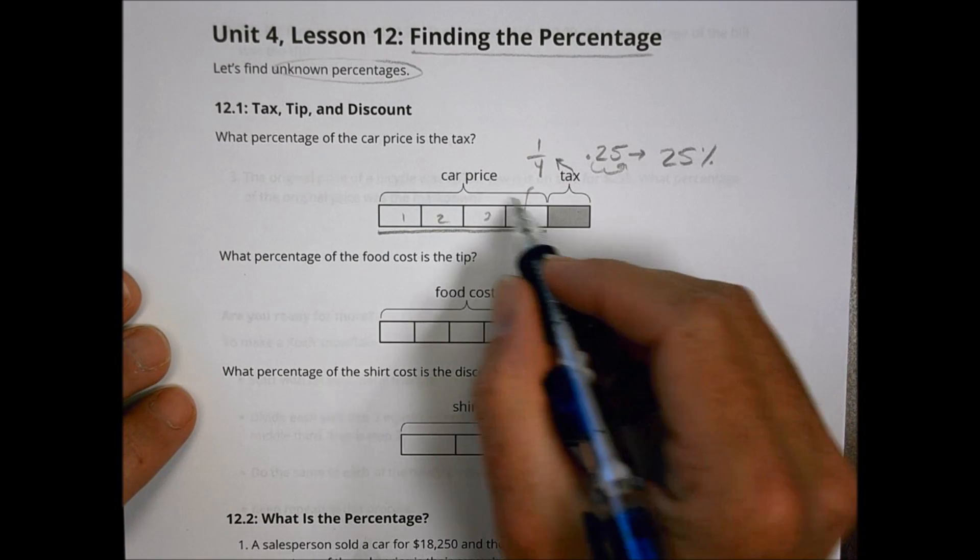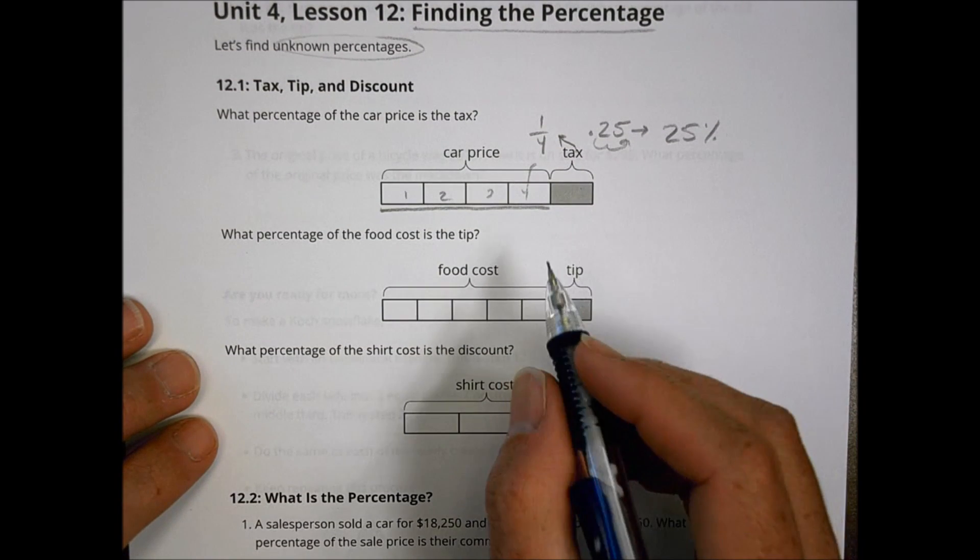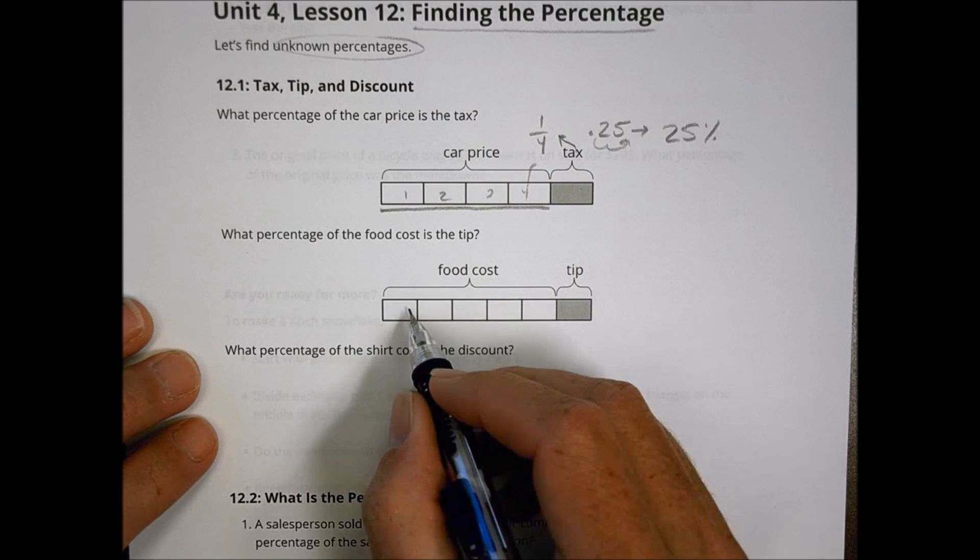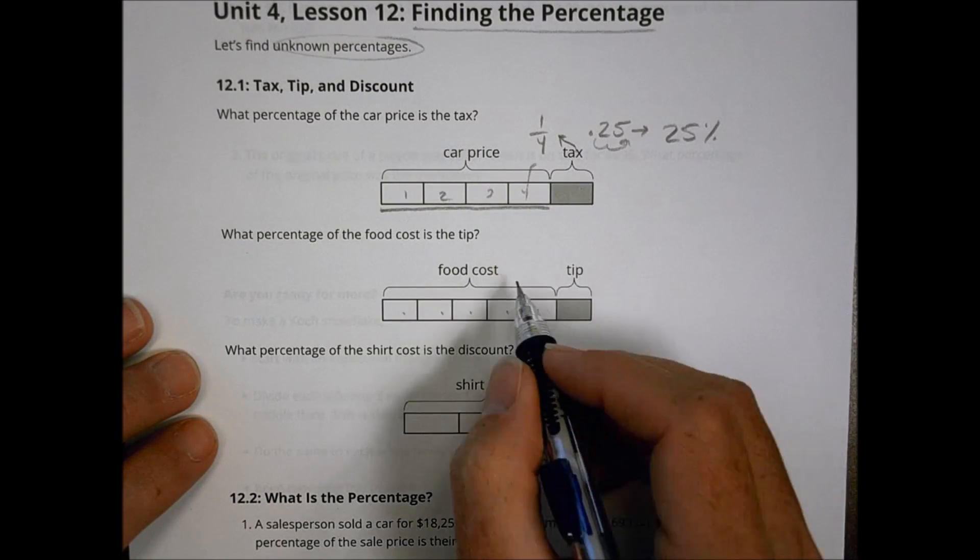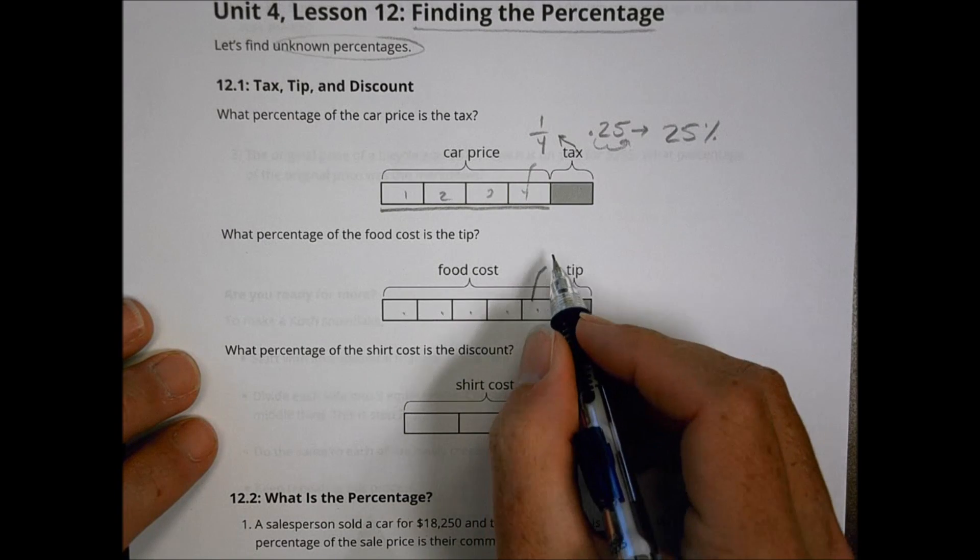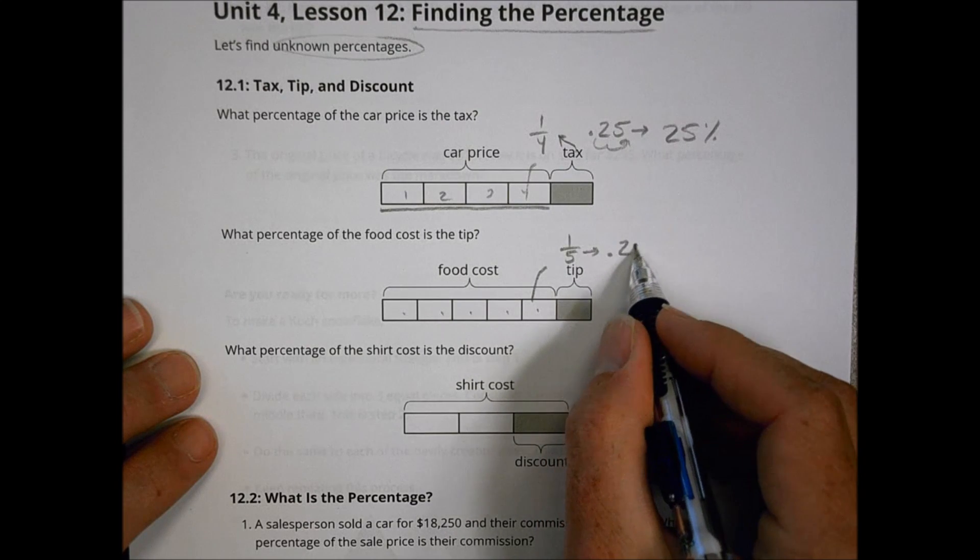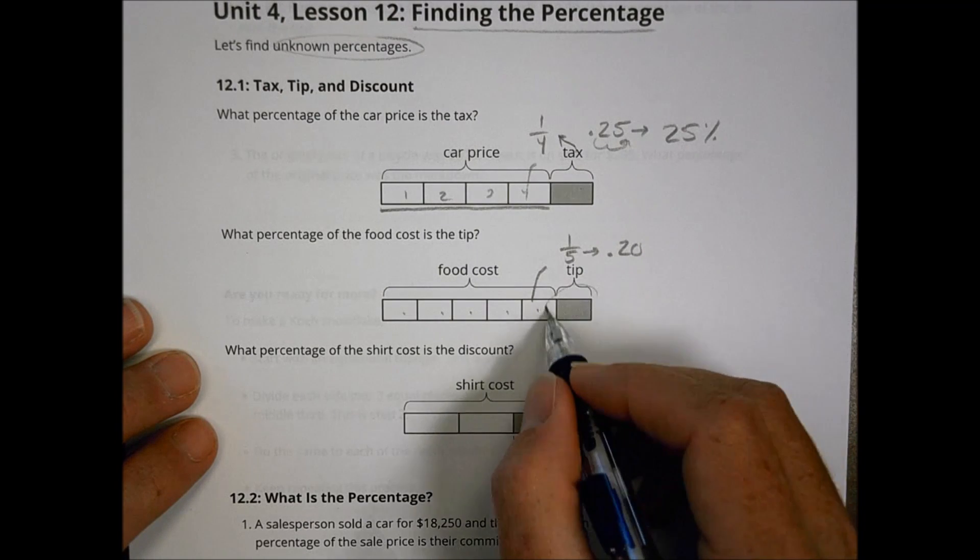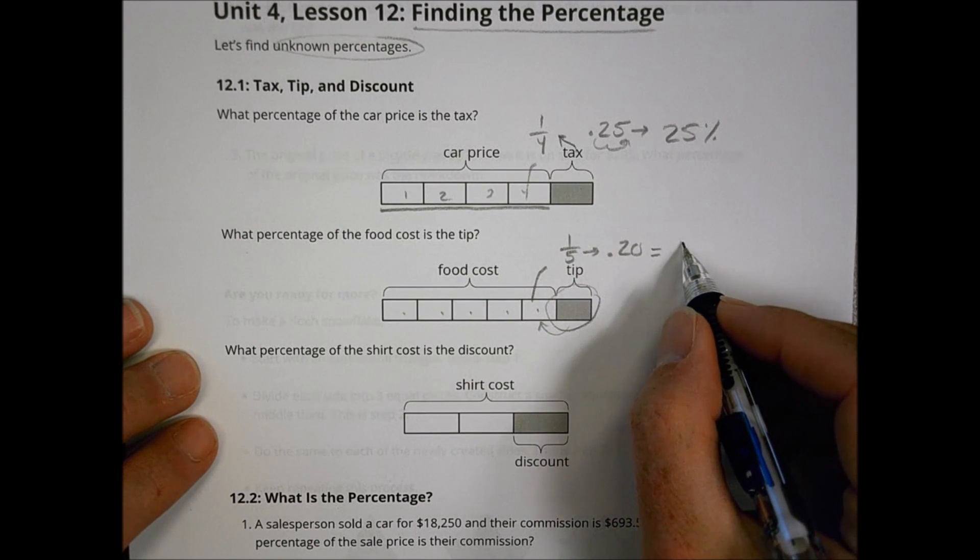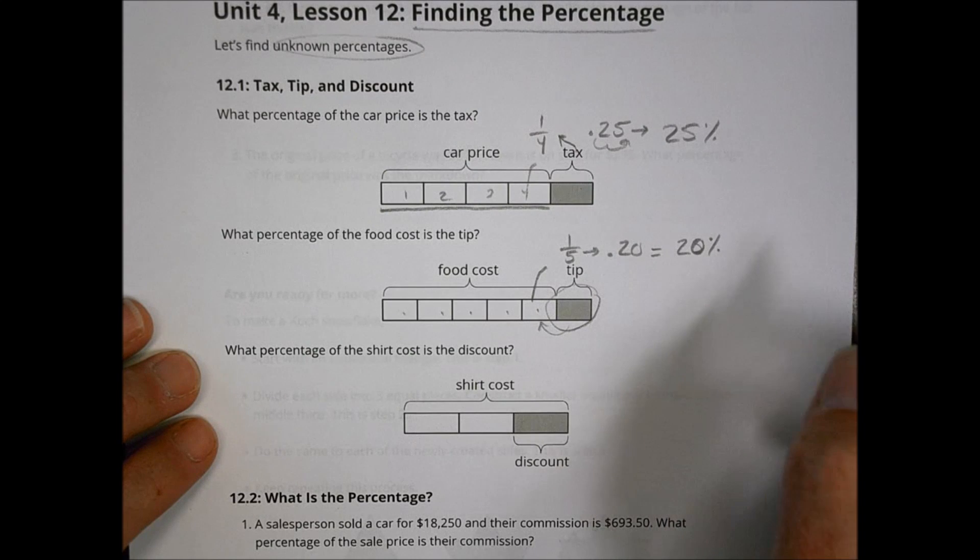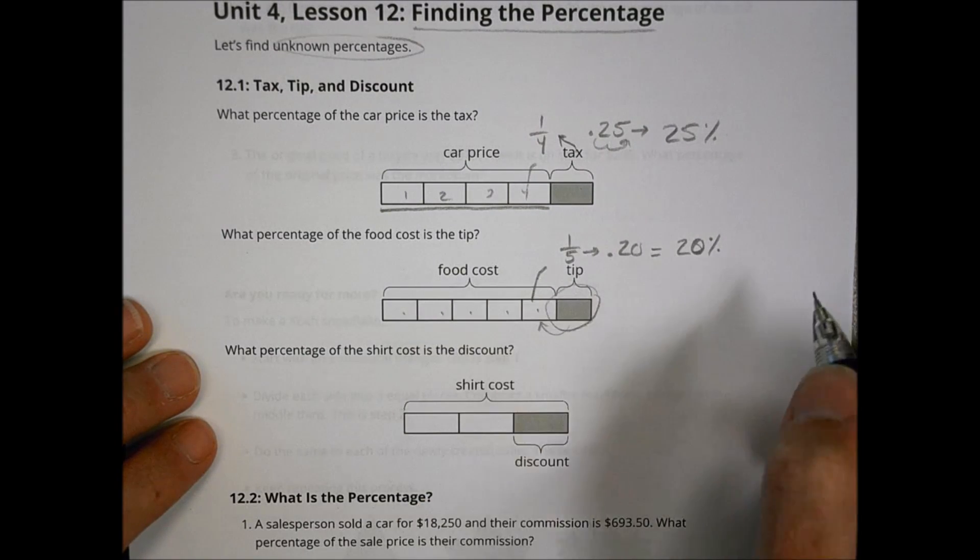When we look at the percentage of the food cost, what percentage of the food cost is the tip? This food cost is broken up into five sections there. So every little block has a value of about one-fifth. One-fifth, written as a decimal, is .20. And since the tip is the same as one of those there, it's also one-fifth. And so it has 20% value as well. So the tip is 20% of the total food cost.